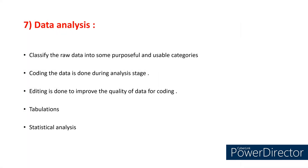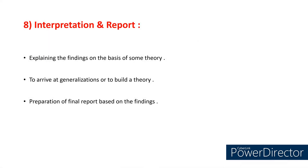After collecting data, we classify the raw data into some purposeful and usable categories — this part comes under data analysis. We code the data during the analysis stage and also edit it to improve the quality of data for coding. In data analysis, we do frequency calculation, tabulations, and apply statistical techniques or statistical methods. After this, we do the interpretation and form a report. We explain the findings on the basis of some theory and also try to arrive at generalizations or build a theory. We ultimately prepare a final report based on the findings collected in our research.